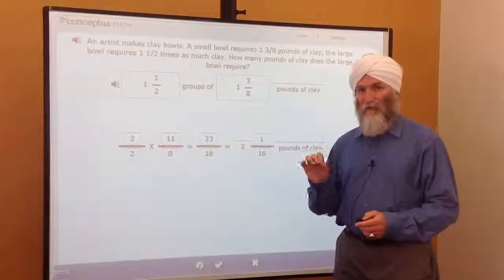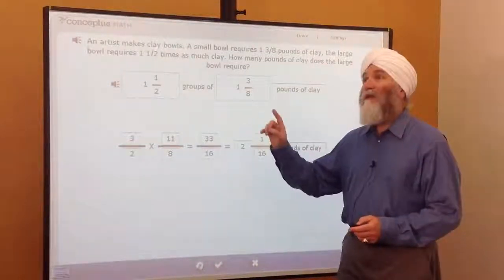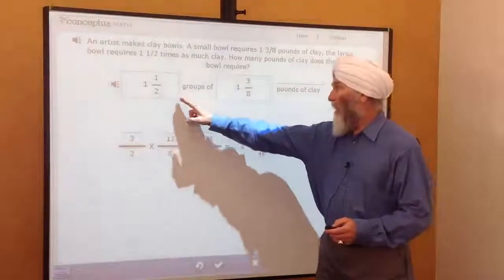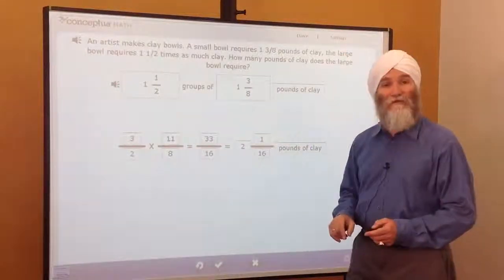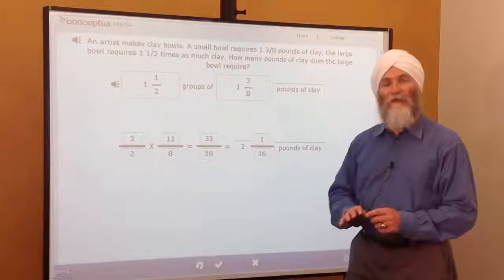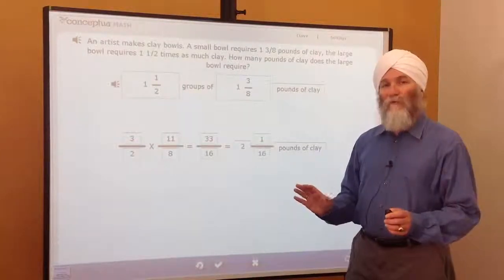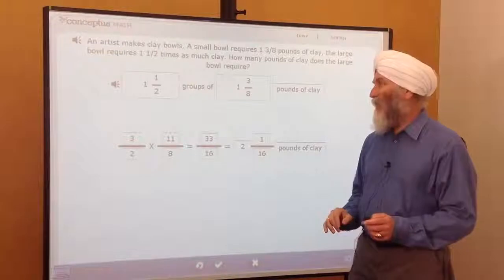Sometimes the answer in a fraction times fraction problem is larger than the starting value. One-and-a-half groups of one-and-three-eighths pounds of clay is going to be two-and-one-sixteenths pounds of clay. So things that were very abstract before are becoming very clear and concrete to students now.